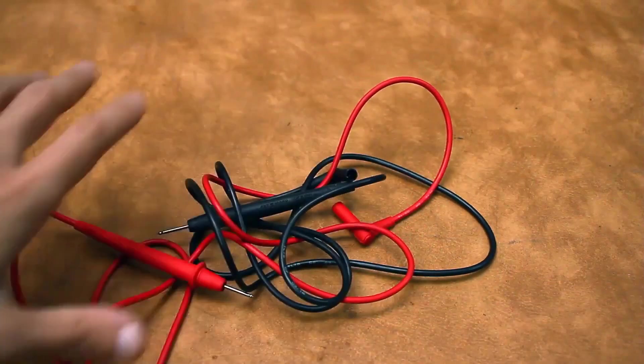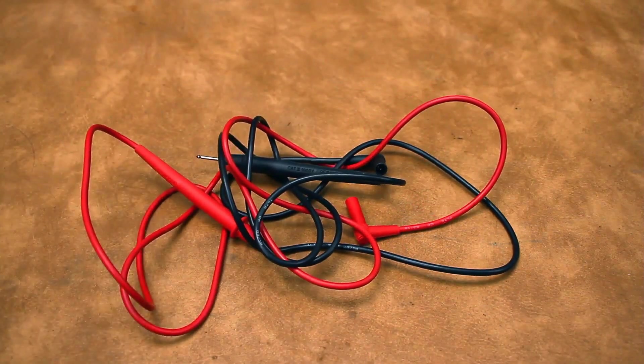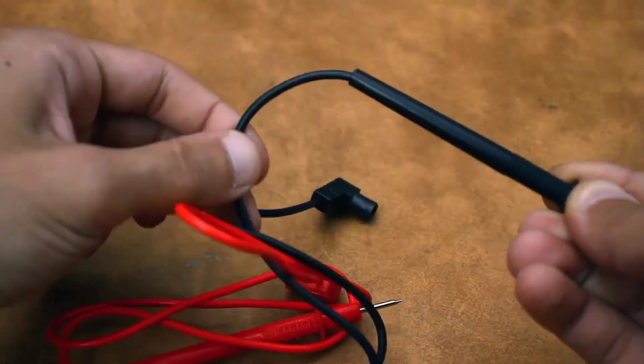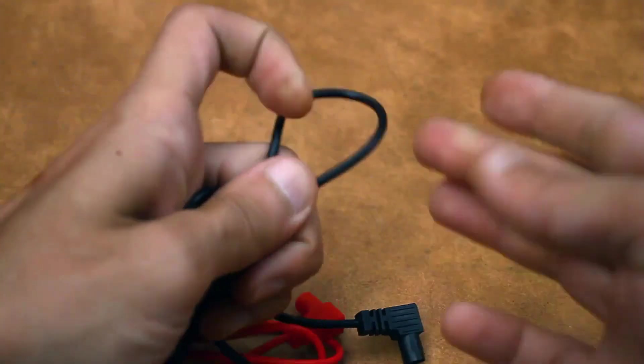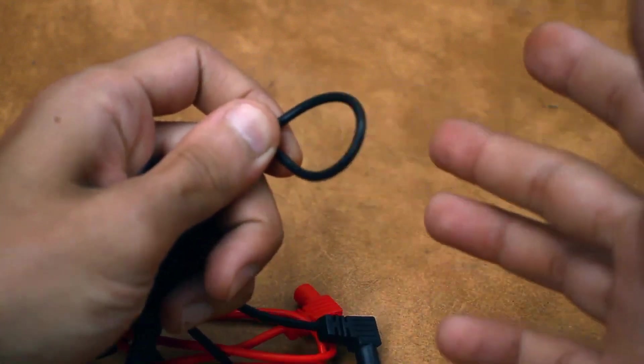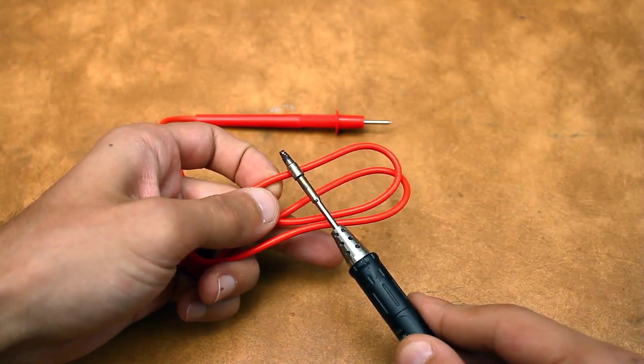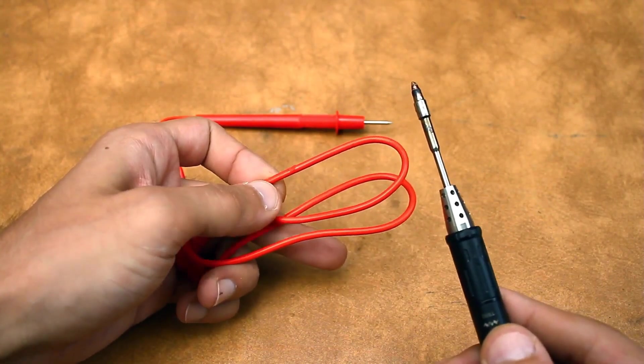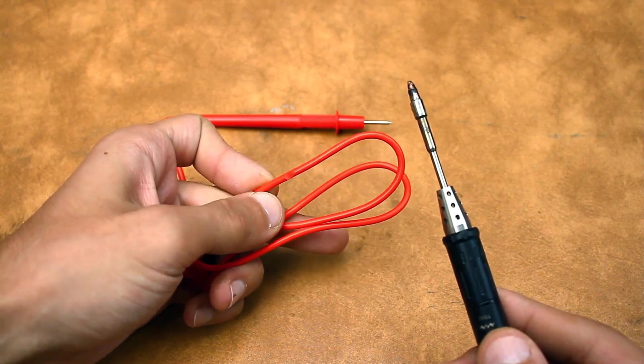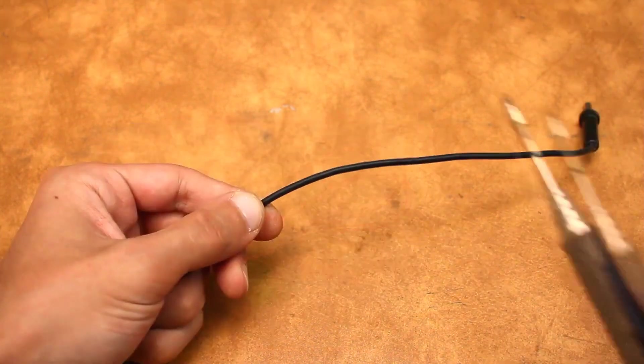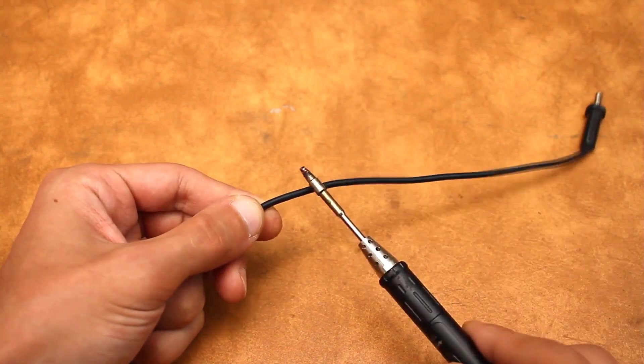The insulation of the wires is also very important. It should be thick enough, elastic, and heat-resistant. In cheap probes, the wire is stiff, cracks in the cold, and can melt, for example, when in contact with a heated soldering iron. We might not notice this and the next voltage measurement in an outlet could be fatal.